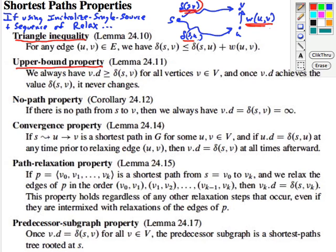Upper bound property. This is saying that the distance estimate will always be an upper bound on the actual distance, and once you achieve that actual distance, it never changes. It never drops below.